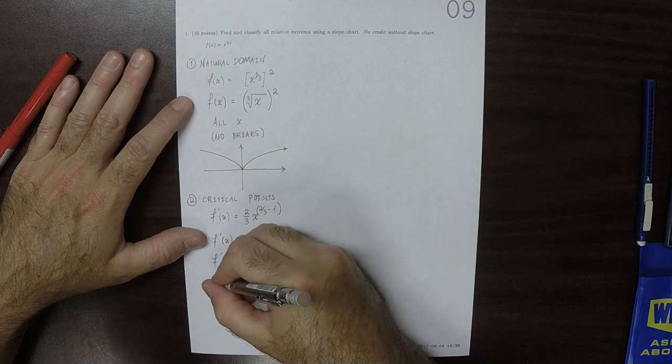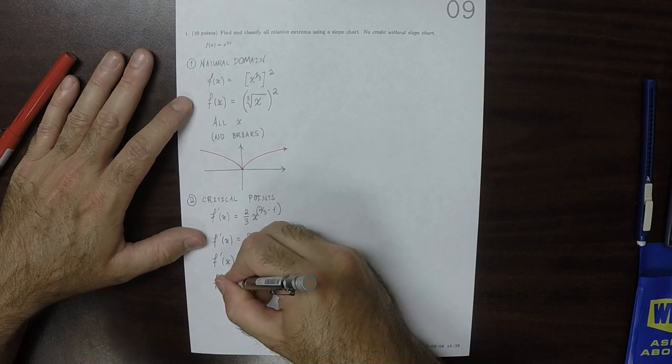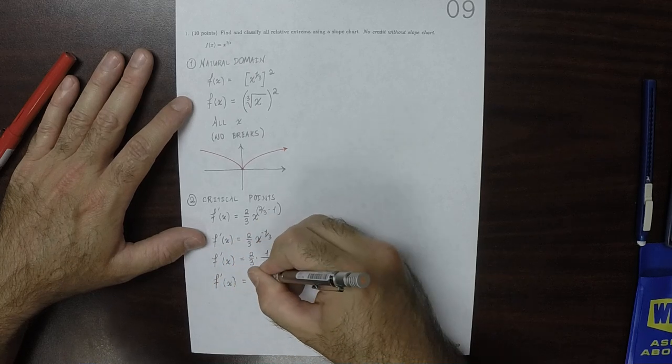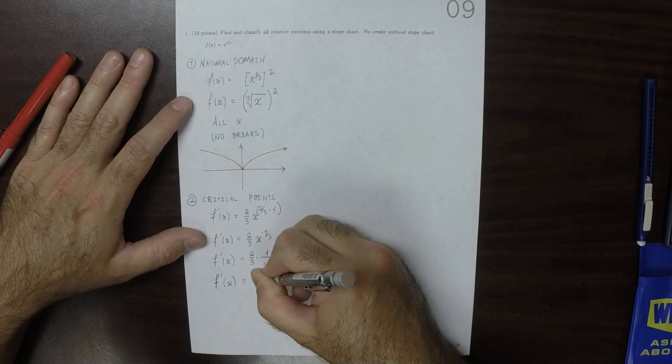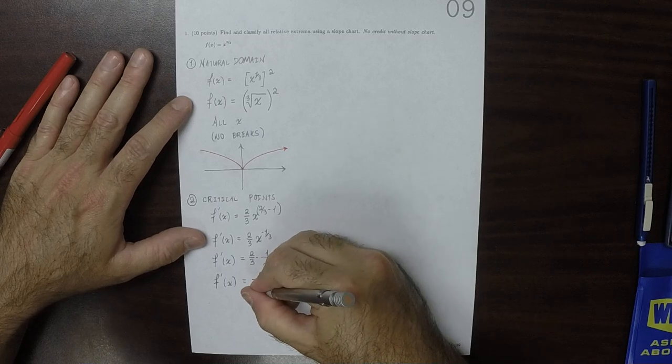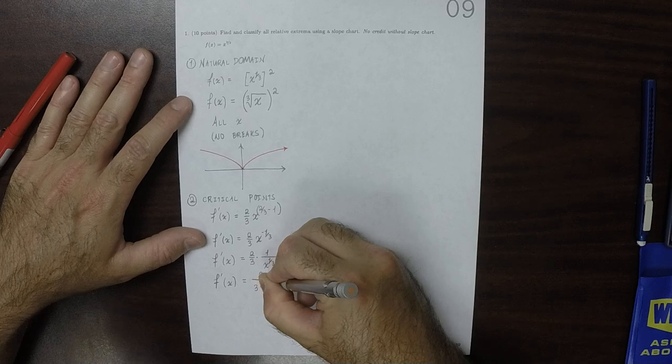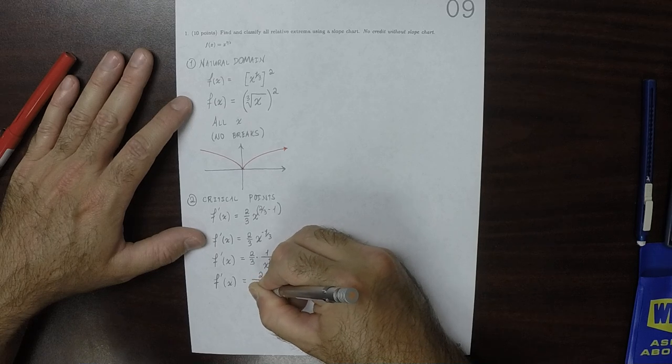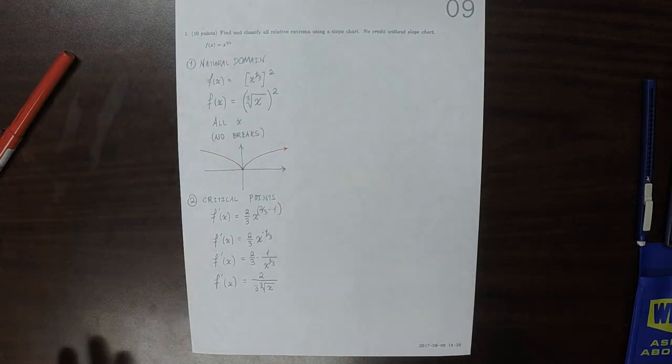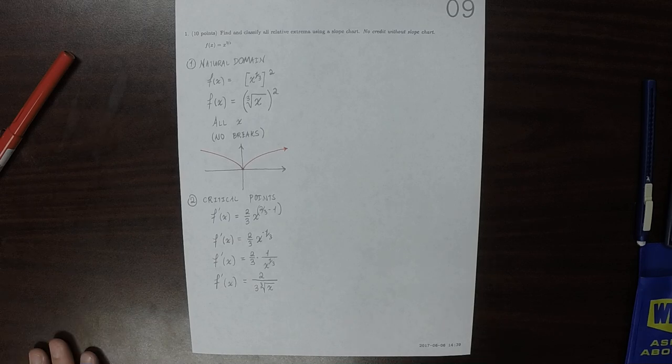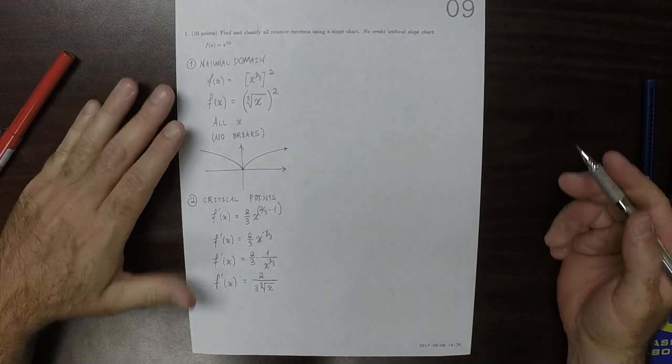And then, if you like, we could write this as, say, two divided by three cubed root of x. Any one of these is fine, but different people have better understanding on different ones.